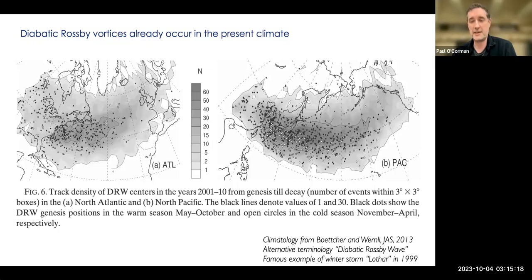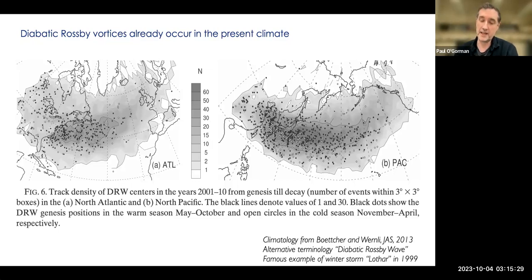A famous example highlighted in a paper by Heini Wernli is winter storm Lothar, which went across the Atlantic, interacted with the jet stream, and had a lot of impacts in Europe. But there have also been high-impact events involving diabatic Rossby vortices on the east coast of the US, for example.